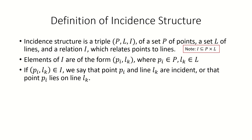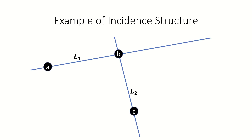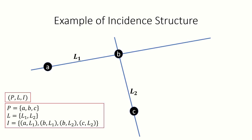Let's look at an example of an incidence structure. This incidence structure has point set P with elements a, b, and c. It has line set L with elements L1 and L2. Points a and b are incident with line L1, and points b and c are incident with line L2. So our incidence relation is the set of ordered pairs: (a, L1), (b, L1), (b, L2), (c, L2).